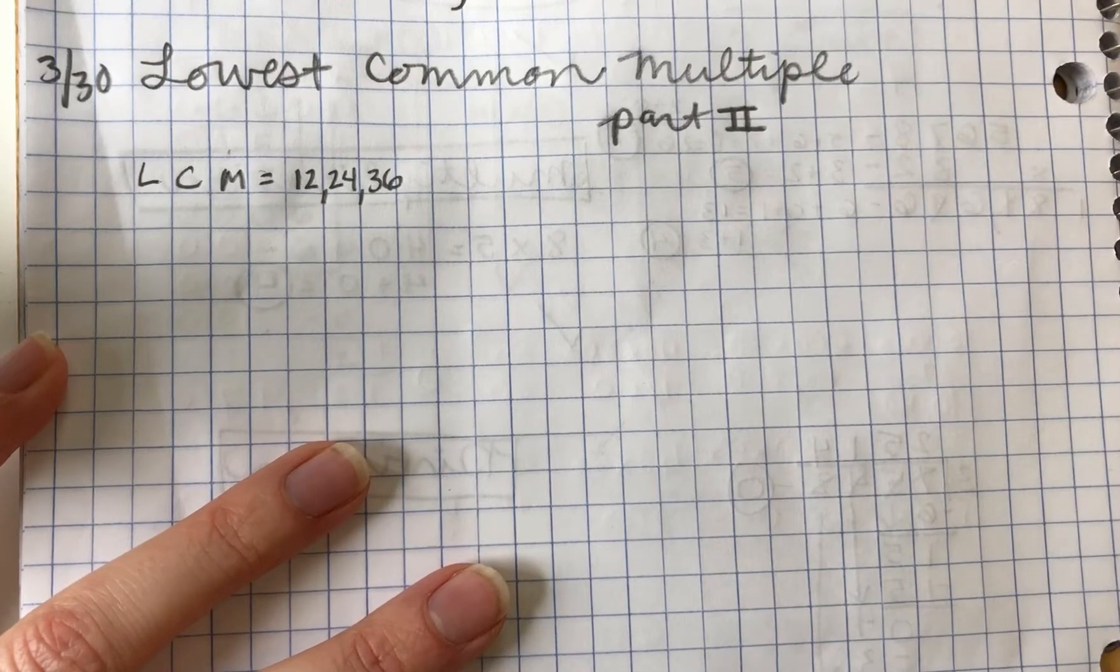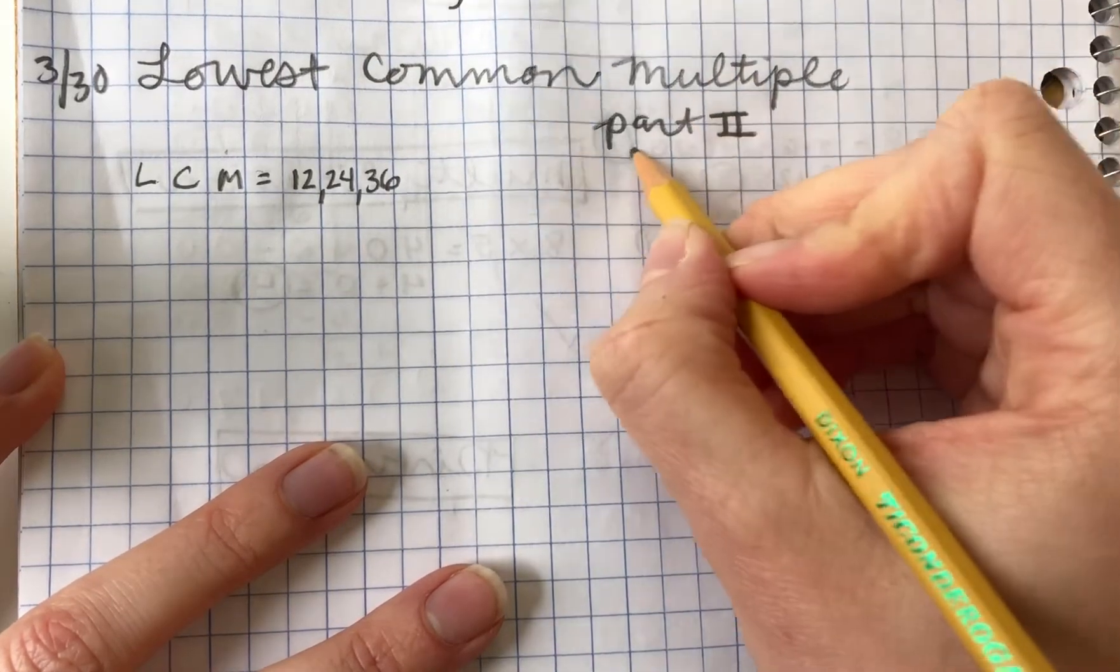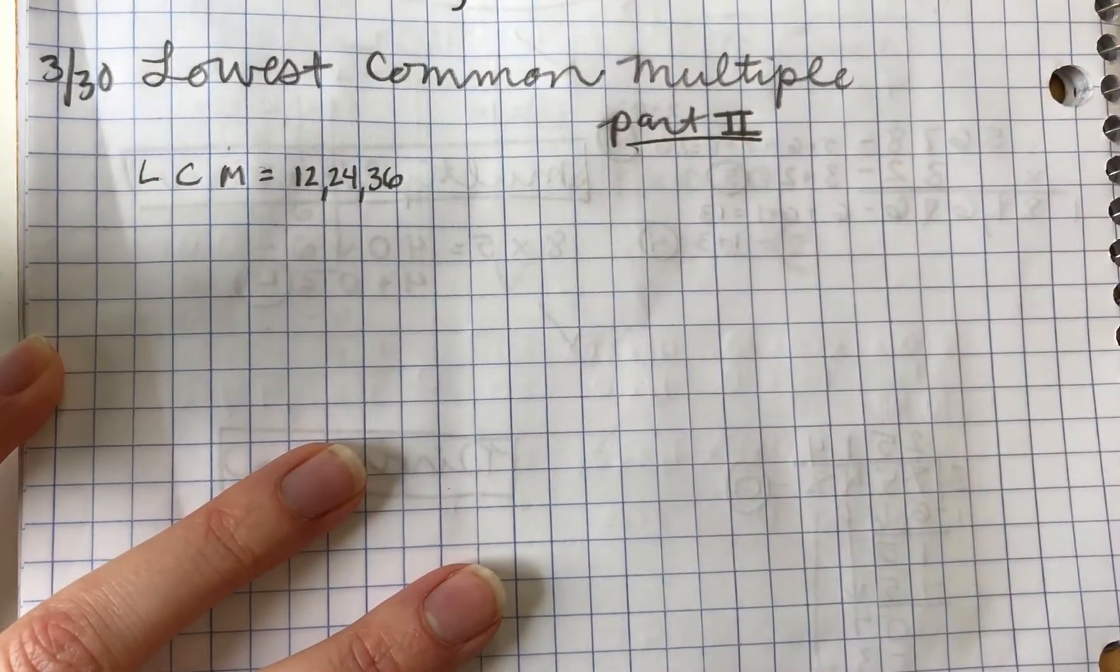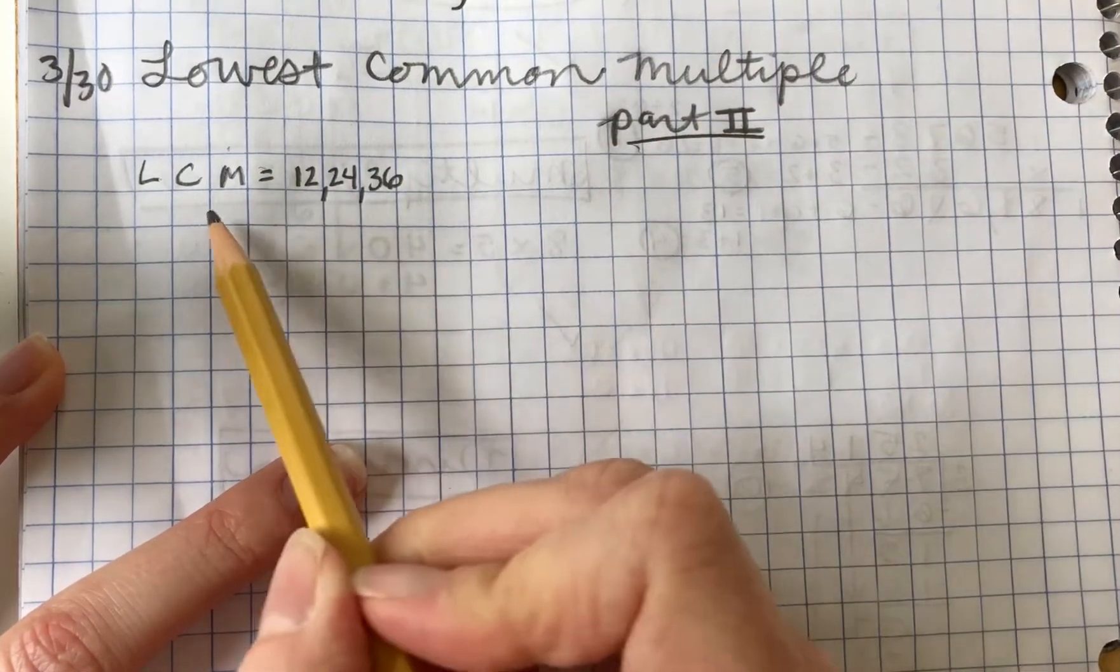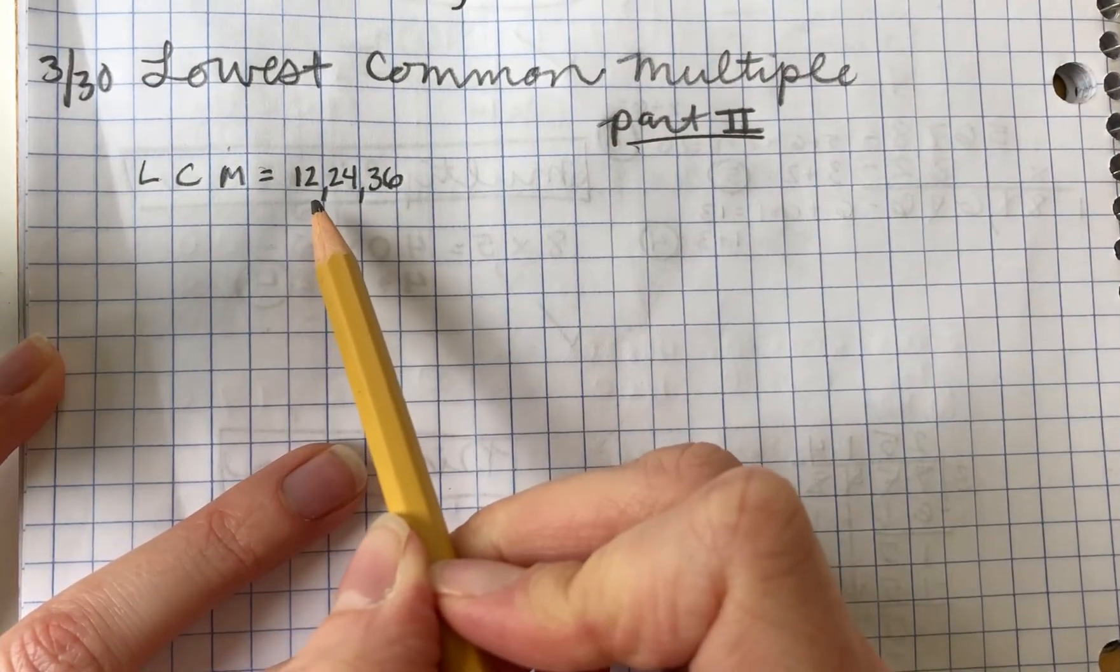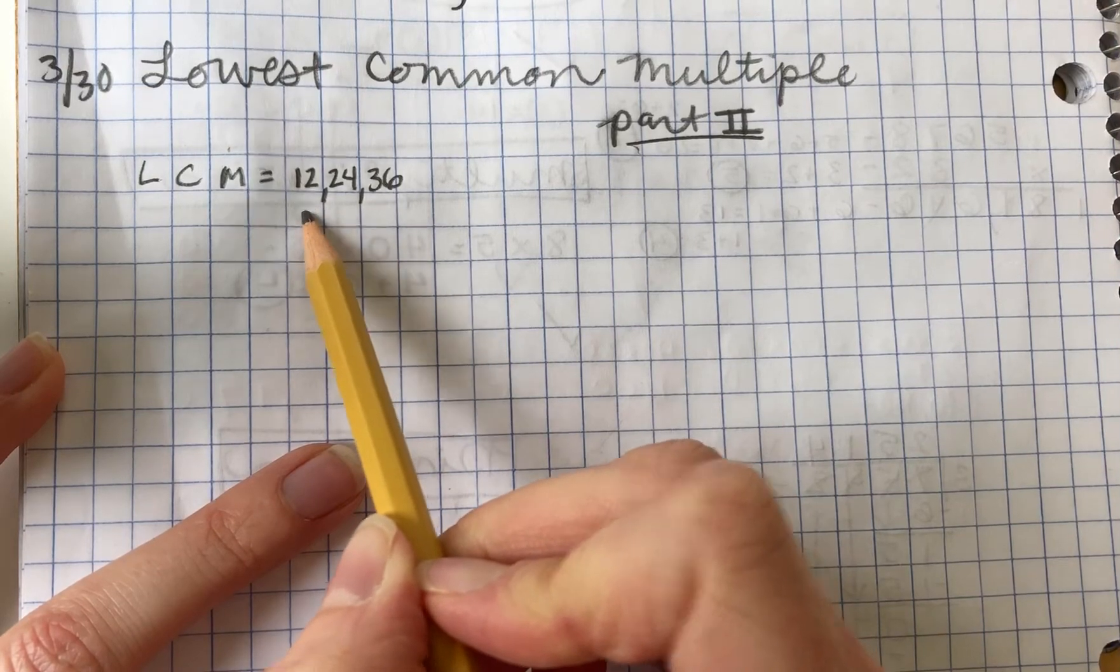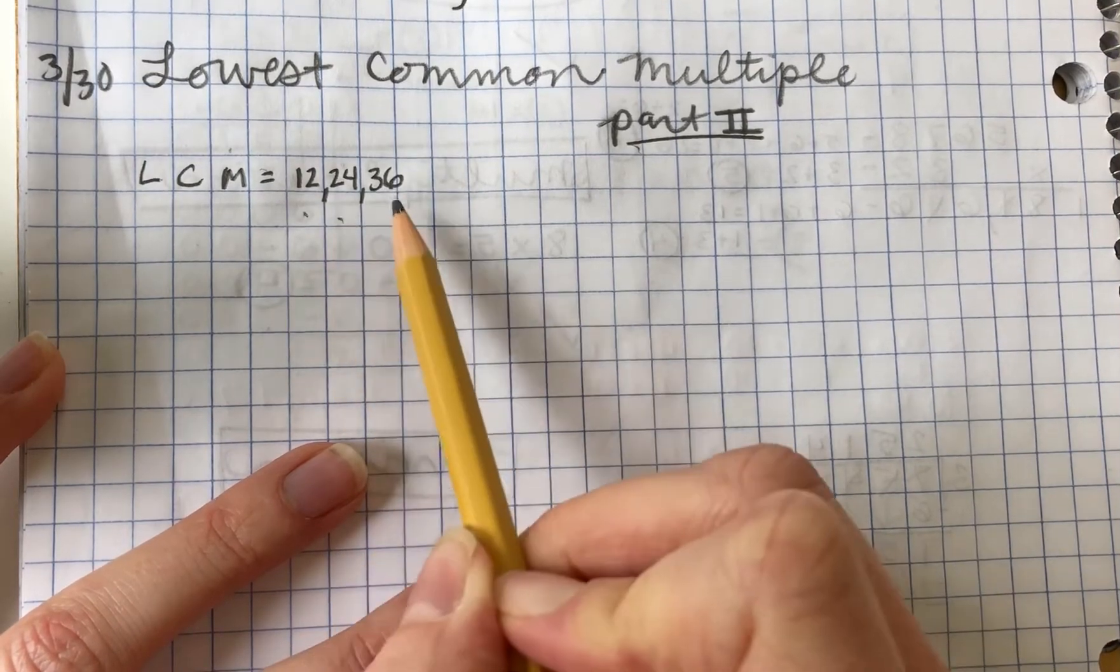All right guys, we're moving on to Lowest Common Multiple part two. This is a bit more difficult because we're going to be finding the lowest common multiple of larger numbers. Today we're going to be working with 12, 24, and 36.